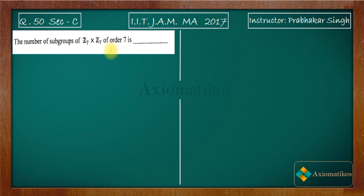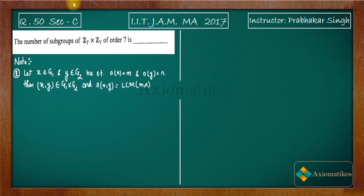Firstly, I want to give you a note that you have to remember for solving this problem. The note tells us that if we have two elements x from G1 and y from G2 such that the order of x is m and the order of y is n, then (x, y) belongs to G1 cross G2 and the order of (x, y) will be lcm(m, n).